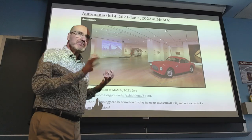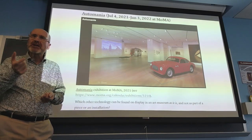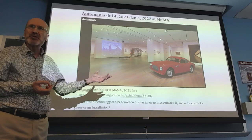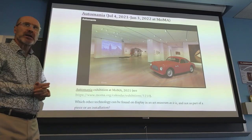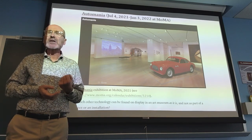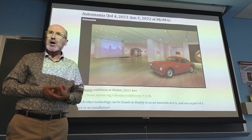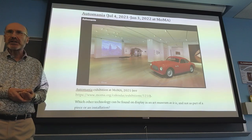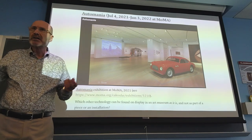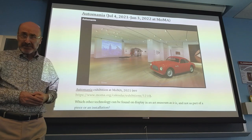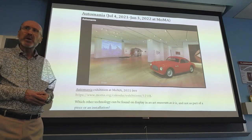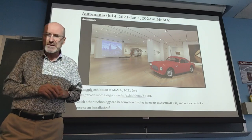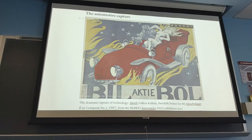One way to realize how different the automobile's connection to users and society is — compared to other technologies — is to consider how many museums, such as the MoMA in New York, have included automobiles in their collections as examples of art, because of their design. This doesn't happen with many other technologies. You can find a hammer in an installation or Duchamp's bicycle wheel — but those are exceptions, whereas many museums have now included cars as works of art.